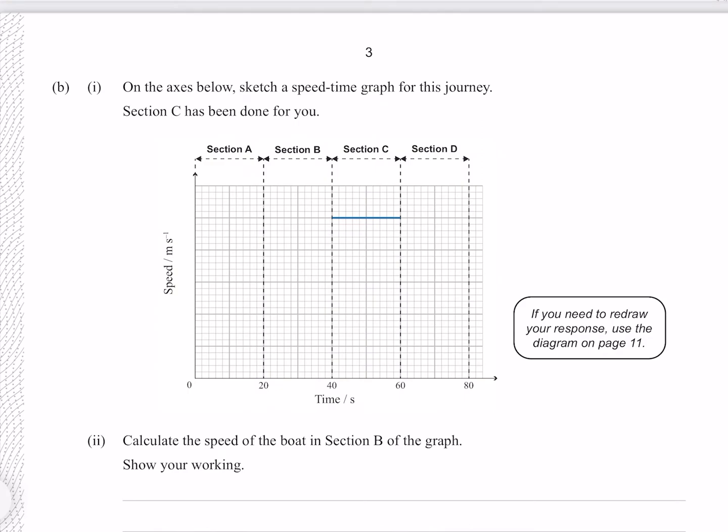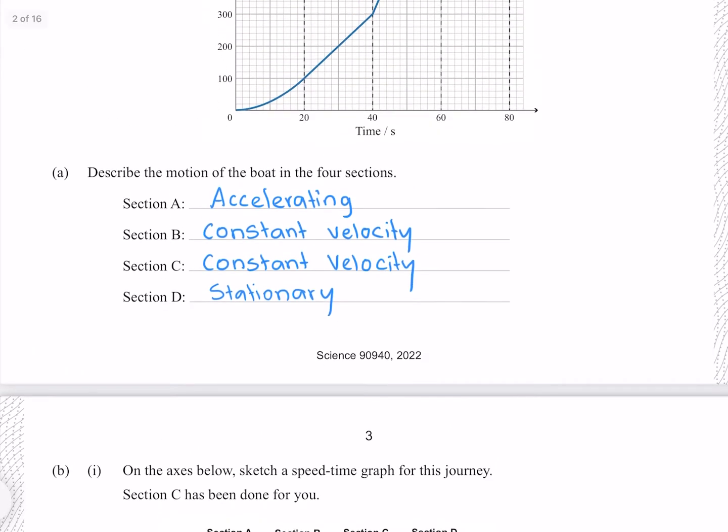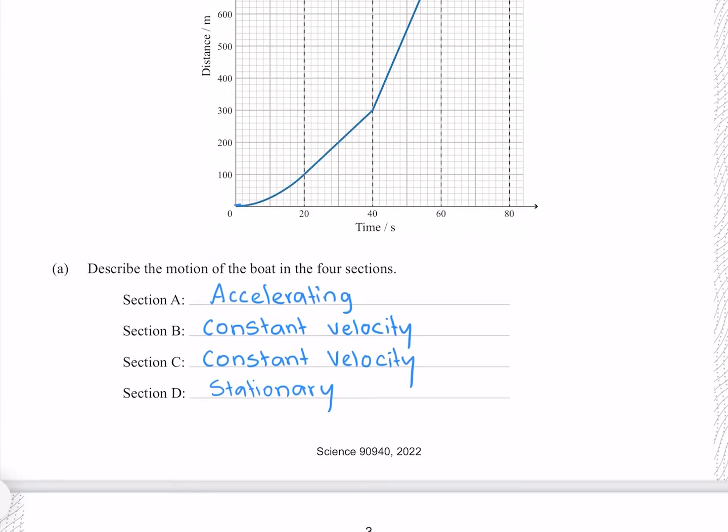On the axis below, sketch a speed-time graph for this journey. Section C has been done for you, and so we'll start with section A. We see that we start from stationary since our slope there is zero and increase to some particular speed. That speed remains constant throughout section B.